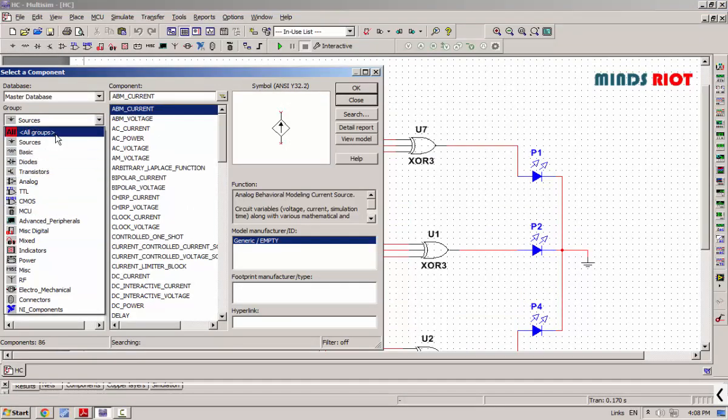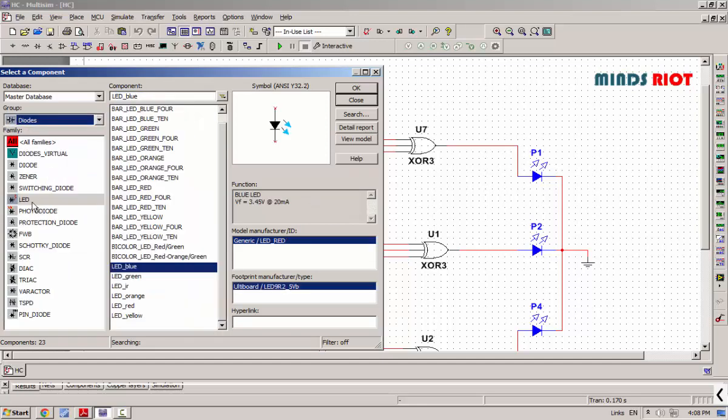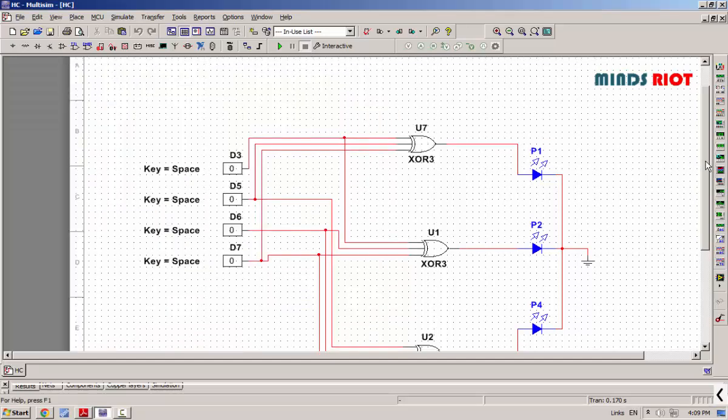We can choose the required components from the select component window. For gates, we will have to click on all groups and for LEDs on the diodes. Once all the connections are done as per the diagram...